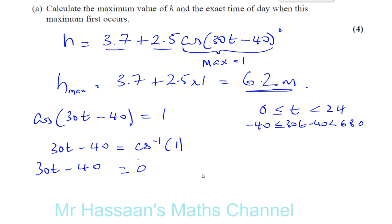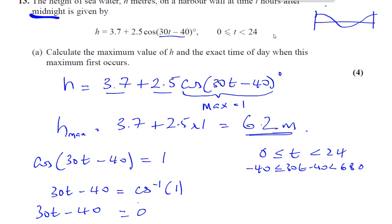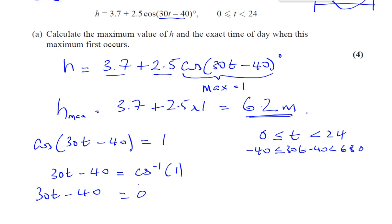We don't need the next value. The next value will be at 360, but that's going to be a value we don't need, because we only want the first time that it occurs. So we're going to catch all the angles between minus 40 and 680. So 0 will be the first angle that we need.